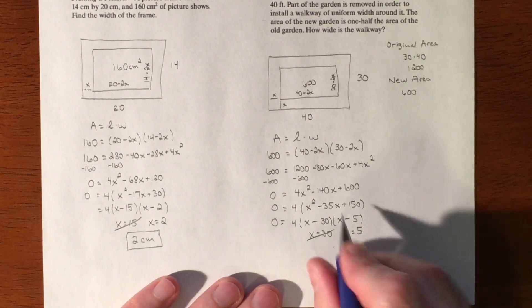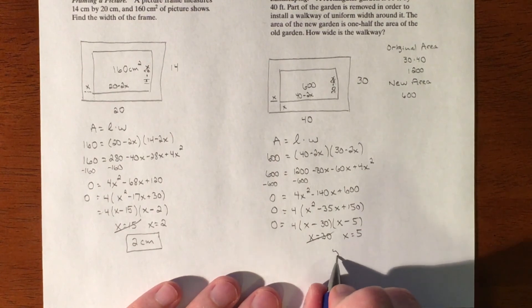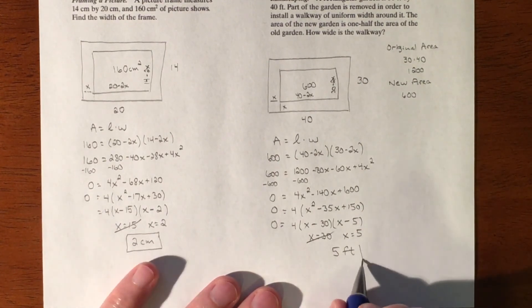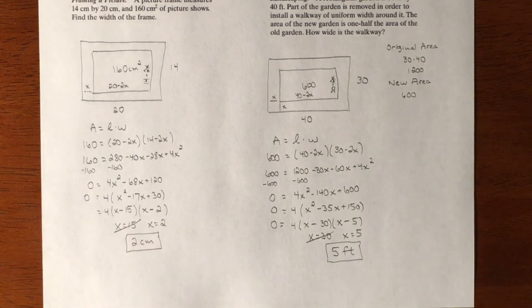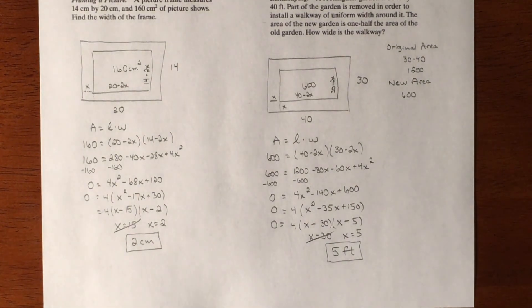So 5 is going to be it. So we're looking at, it says how wide is the walkway, and these are in feet. So 5 feet is the width of the walkway all the way around. All right, and that was our fourth example of a word problem.